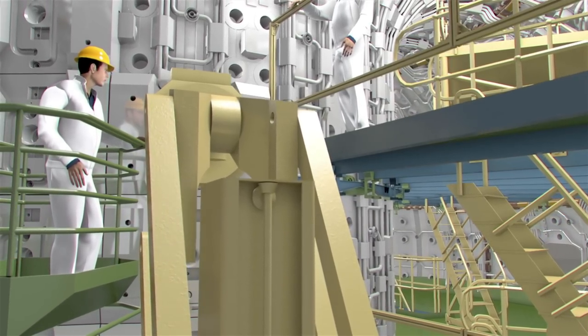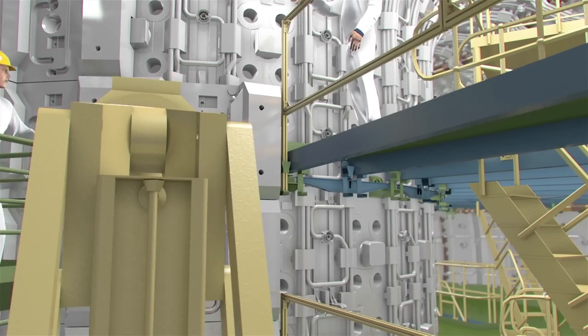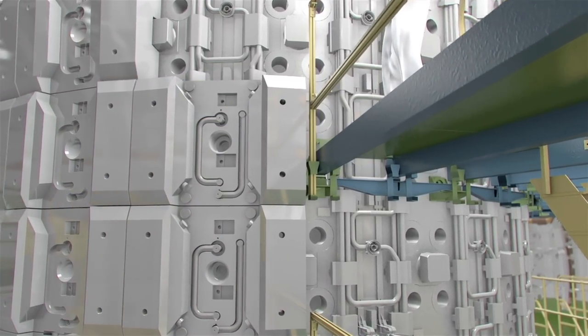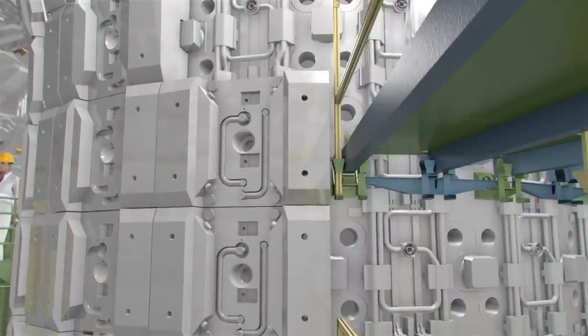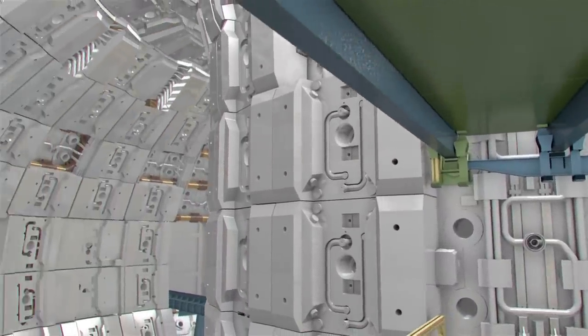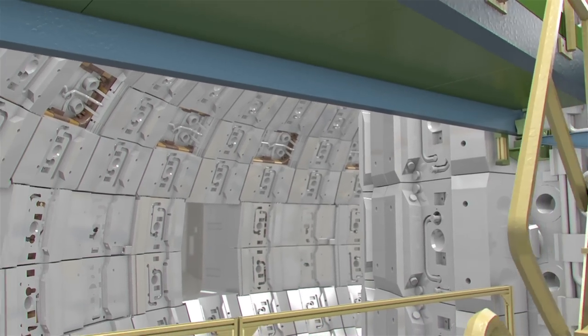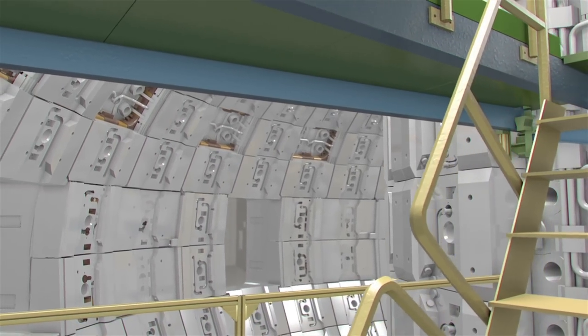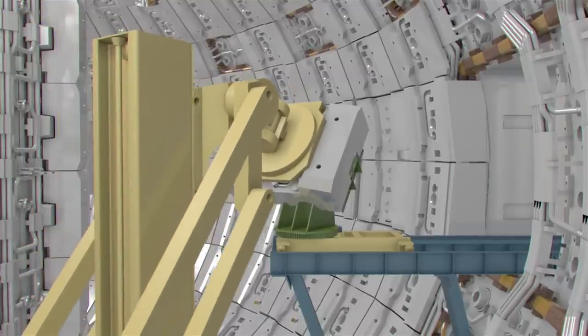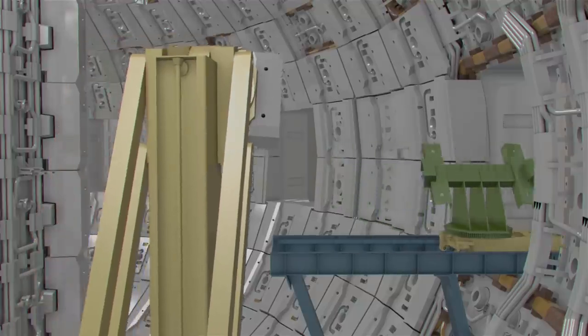Before these heavy components are lifted into position, a photogrammetry survey will be performed. This technology, originally developed from the navigation system used on missions to the Moon, will provide the data required to accurately position and align the modules to form a smooth envelope for the delicate plasma. This huge task of customizing thousands of components to very tight tolerances is certainly not the most glamorous task of building a fusion device, but like all preparatory works, they are key to the success of ITER's mission.